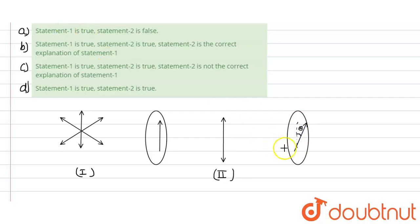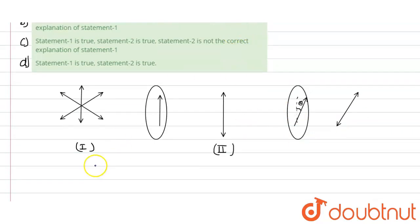So our electric field would oscillate accordingly in this direction. Now, if initially the unpolarized intensity was I, now after passing through the Polaroid, it would be I divided by 2. So unpolarized light to polarized light, it would be I by 2.